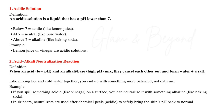Number one, acidic solution. What is an acidic solution? It is a liquid that has a pH below seven. Anything below seven is considered acidic, like lemon juice, for example. At seven, it would be considered neutral — pure water, for example. Anything above seven will be considered alkaline, like baking soda. So lemon juice or vinegar are acidic solutions.